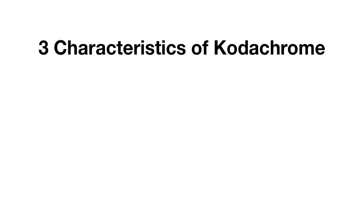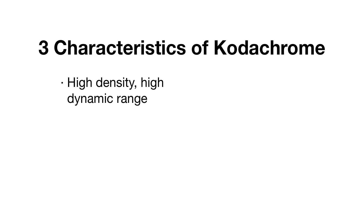What makes Kodachrome film so special? Kodachrome film is very dense, meaning it has a wide dynamic range. We therefore recommend scanning using multi-exposure. Multi-exposure can as much as double the dynamic range a scanner is capable of reproducing.